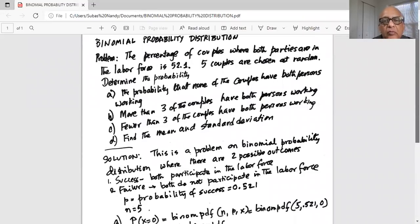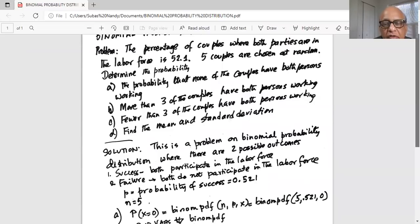So this is a problem on binomial probability distribution. The percentage of couples where both parties are in the labor force is 52.1%. Five couples are chosen at random. Determine the probability. There are three or four parts to the problem. First part says determine the probability that none of the couples have both persons working.